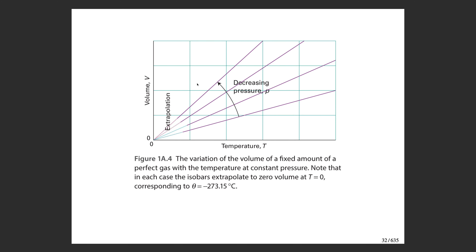If you extrapolate all of these lines down to zero volume, you'll notice they all converge at the same point: zero Kelvin. This is what we call absolute zero.